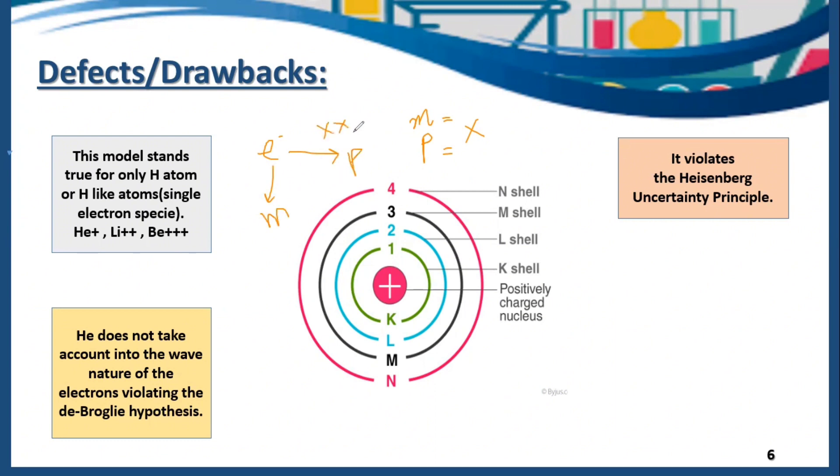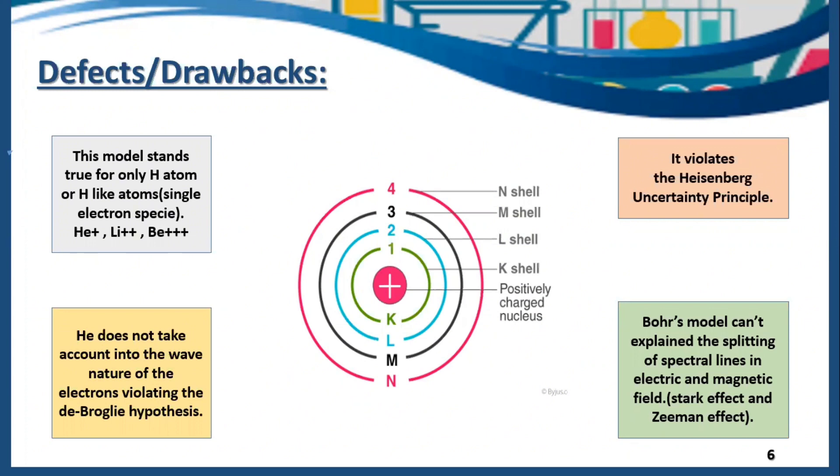Bohr's model didn't explain the splitting of spectral lines in electric and magnetic field. Whenever spectral lines passed from the electric or magnetic field, they will deviate. When spectral lines split in an electric field, that is called as Stark effect. When the spectral lines split in the magnetic field, that effect is called as Zeeman effect. These two effects, Stark effect and Zeeman effect, are not explained by Bohr's atomic model. These all are the defects of Bohr's atomic model that was later on explained by other scientists through other theories and models.